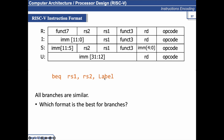In a branch instruction we have rs1, rs2, and a label which is 12-bit immediate data. The R-format already has a different purpose and won't serve us. The I-format also does not fit. The S-format has rs1 and rs2 and could serve our purpose. The U-format cannot serve our purpose. So S-format is the best format to represent branch (BEQ) instructions.